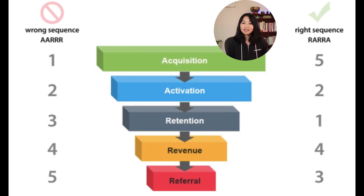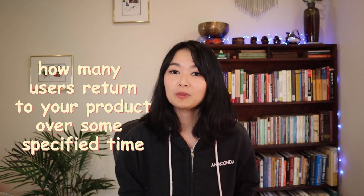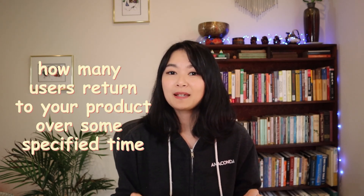It is a lot cheaper to retain a user than to get a new one. For many other reasons, some people later reprioritized the AARRR framework to the RARR framework with retention as the number one priority. The RARR framework stands for retention, activation, referral, revenue, and acquisition. So the first question that comes to mind might be: how do we define and measure retention? Retention measures how many users return to your product over some specified time.